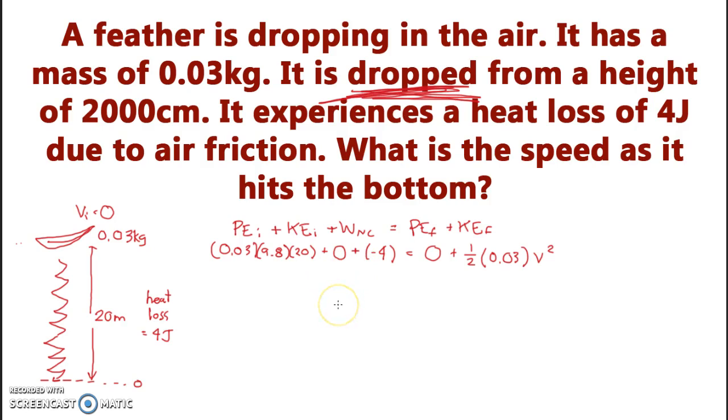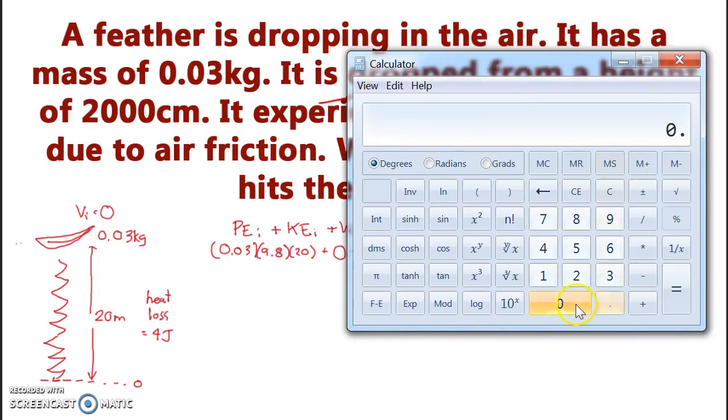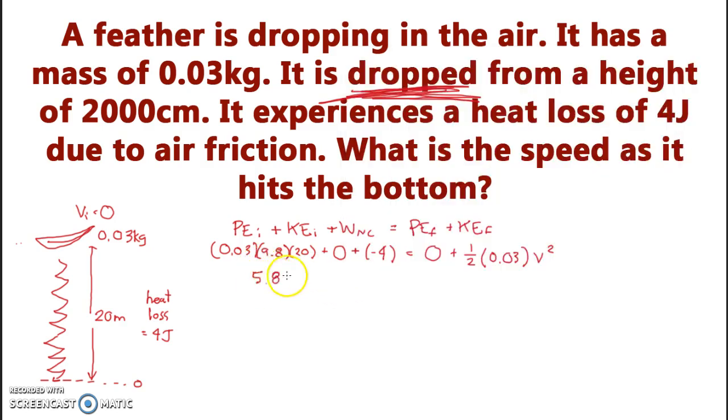Okay, so what do we got? Calculator time. 0.03 times 9.8 times 20. What do I get? 5.88. Okay, let's get that in there. 5.88 minus 4 will be equal to 1 half of, okay, so what is that? That's 0.015 v squared. Okay, so what are we going to get? We're going to get 1.88 divided by 0.015 all square rooted to be equal to my speed at the bottom.